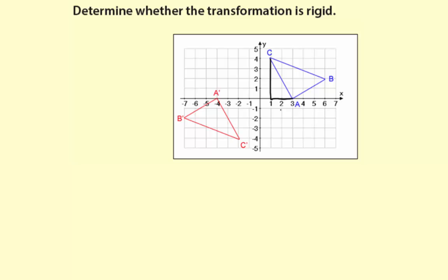Okay, now segment AC is two and then four. A prime C prime, two and four. So this means that segment AC and A prime C prime, they're the same length.